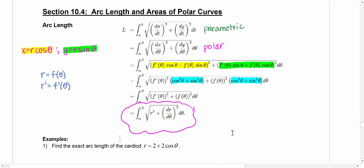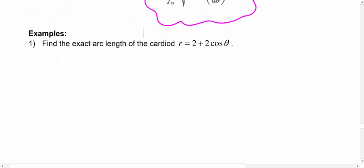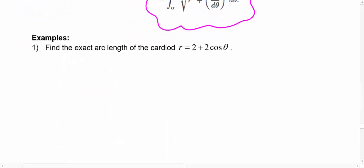So let's find the exact arc length of this cardioid. And this one's going to use a little bit of our trig knowledge as well. So we're going to need to remember a couple of those identities. So what we're going to do first is graph it and make sure that we know the window in which we're trying to find this arc length.